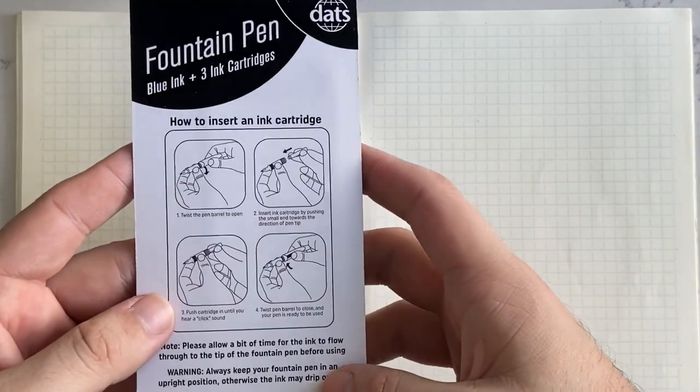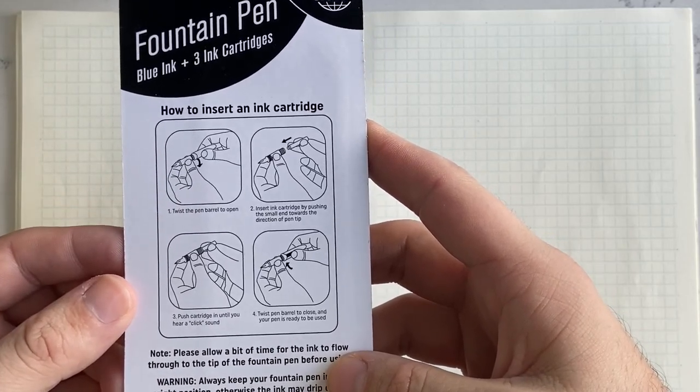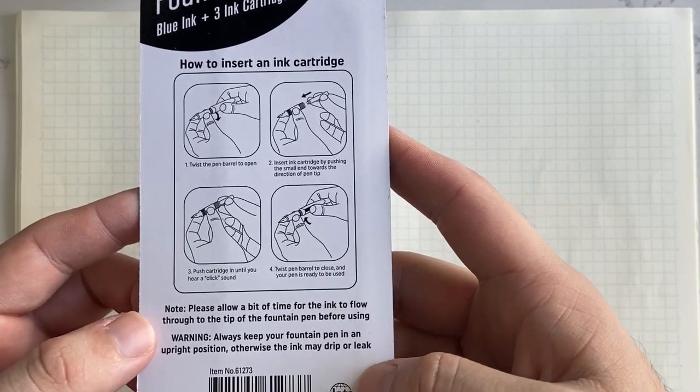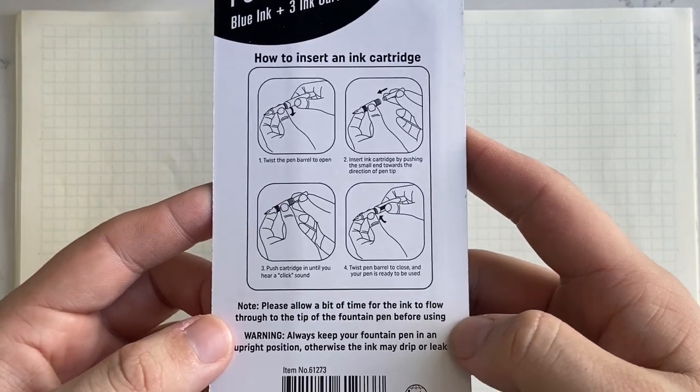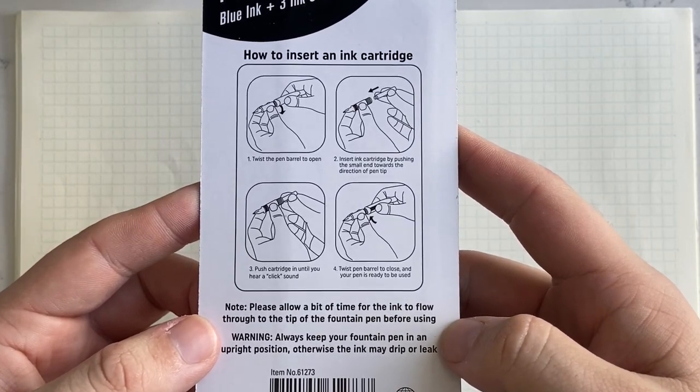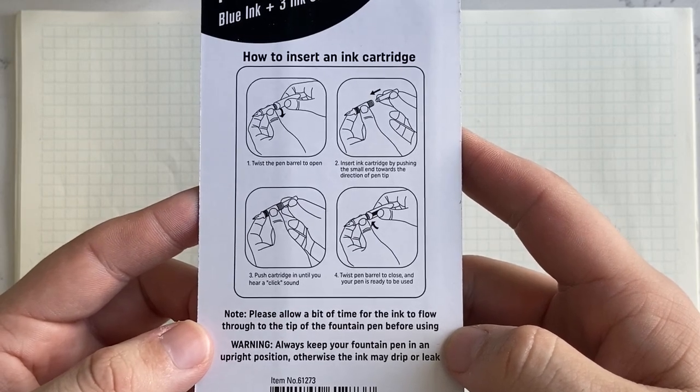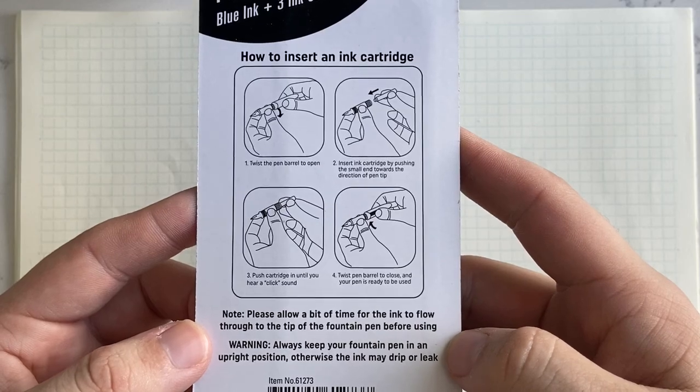It's got some very basic information on the back about how to load the cartridge, which I think is good. But one thing I really did enjoy was that there's a note and a warning here. The note says, please allow a bit of time for the ink to flow through to the tip of the fountain pen before using. And the warning: always keep your fountain pen in an upright position, otherwise the ink may drip or leak.